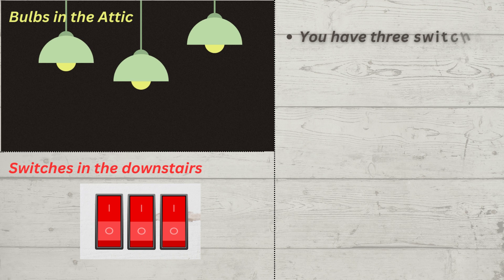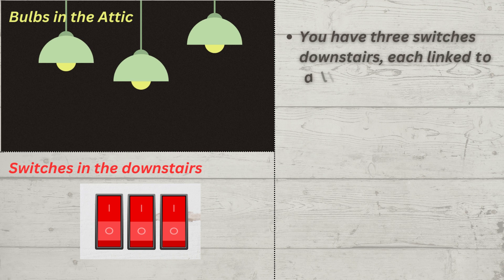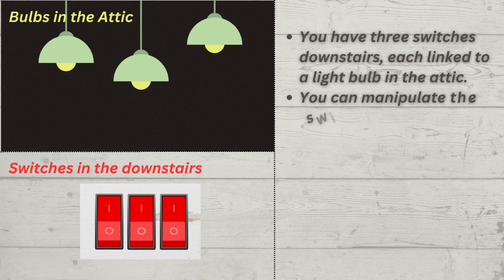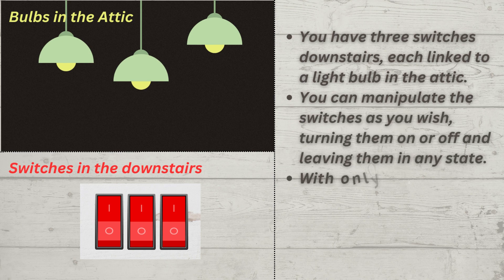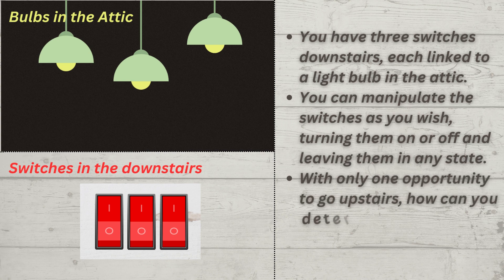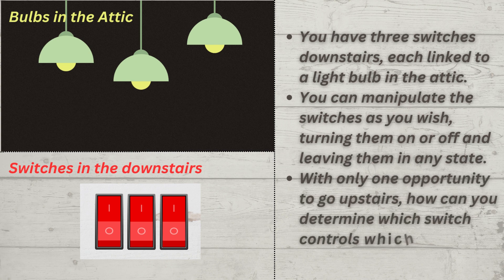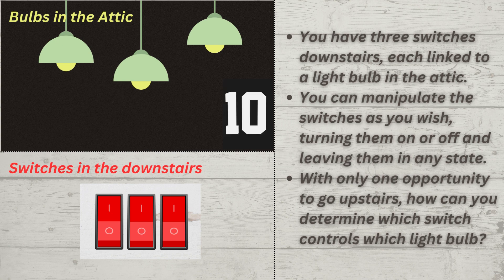You have three switches downstairs, each linked to a light bulb in the attic. You can manipulate the switches as you wish, turning them on or off and leaving them in any state, with only one opportunity to go upstairs. How can you determine which switch controls which light bulb? You're welcome to hit the pause button and discover the answer on your own.